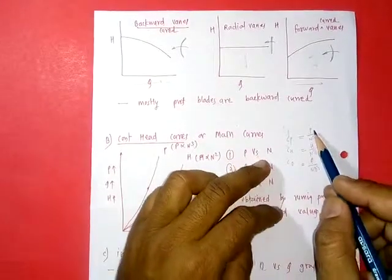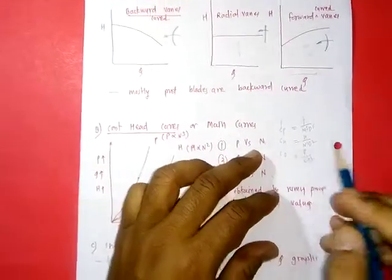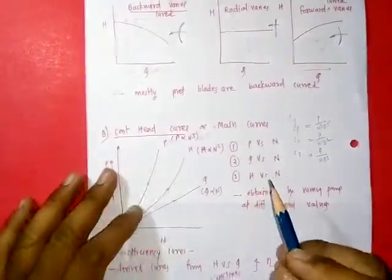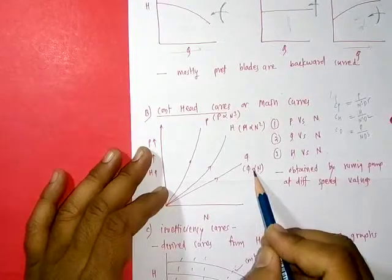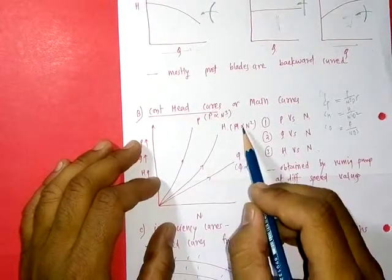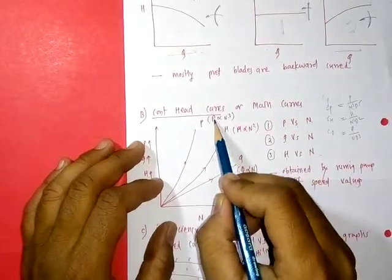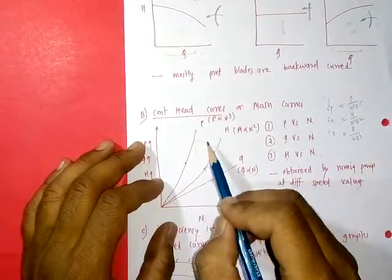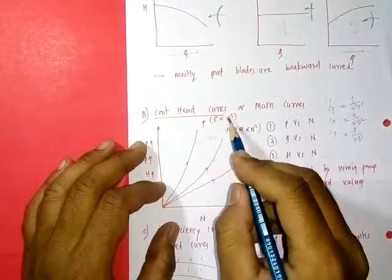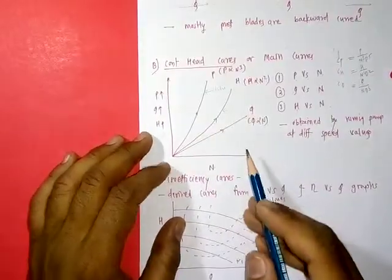From these coefficients, power P is proportional to N³, head H is proportional to N², and discharge Q is proportional to N. So variations of Q are linear with N, variations of H are parabolic with N, and variations of power versus speed are cubic because P is proportional to N³. These are the constant head curves or main curves.